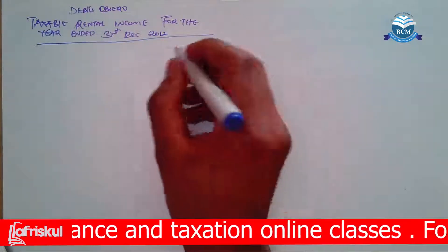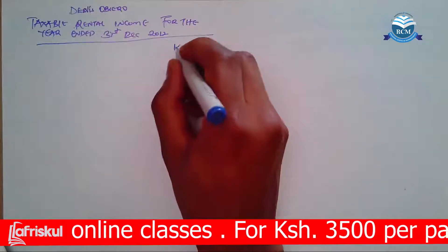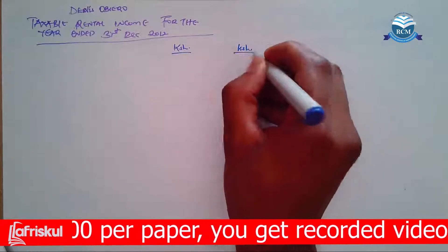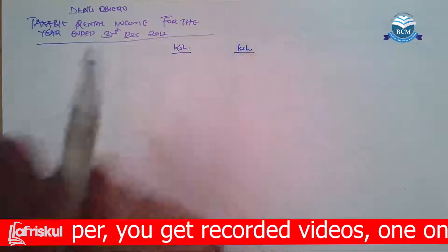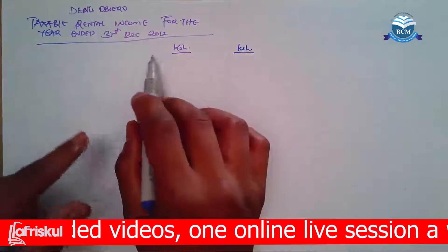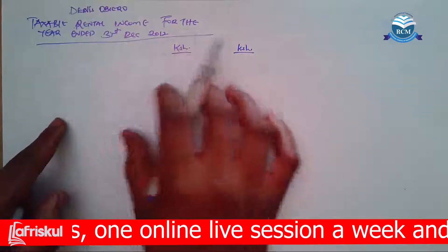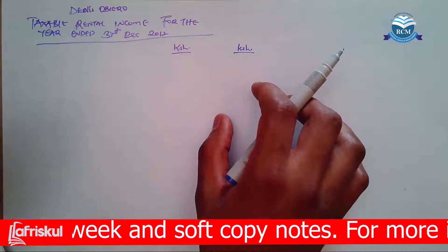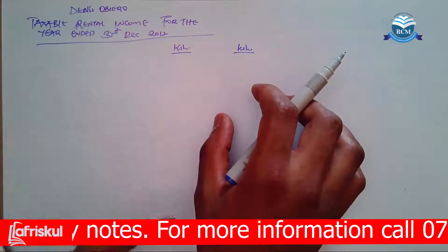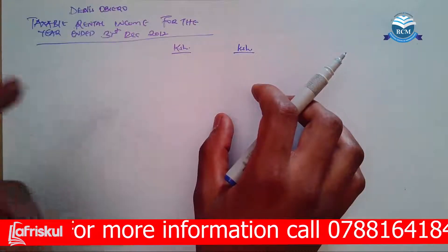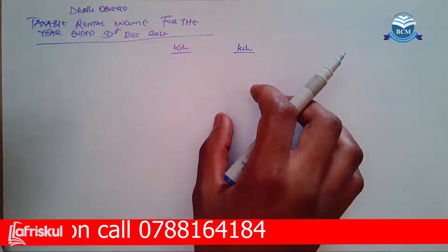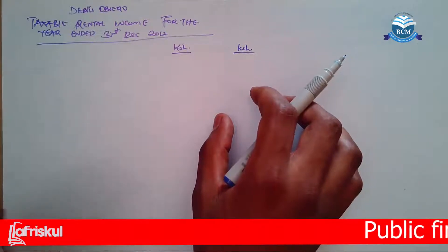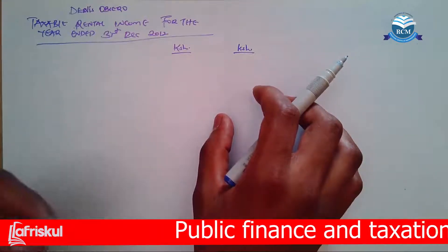After your title, you're going to have two columns of Kenya shillings. Then, because I need the taxable rental income, it means I have to take the income, subtract the allowable expenses of rentals, and I will be able to get the total rental income.